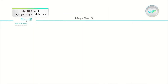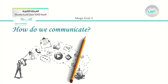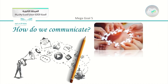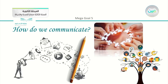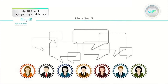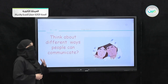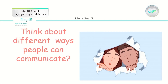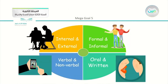So talking about communication, we have this question: how do we communicate? Have you ever thought clearly about how we communicate with each other? We know that there are ways to communicate, and we can understand each other even if we are not talking. So we are going to focus on the ways that people can communicate without even speaking. We have formal and informal, oral and written, internal and external, verbal and nonverbal.